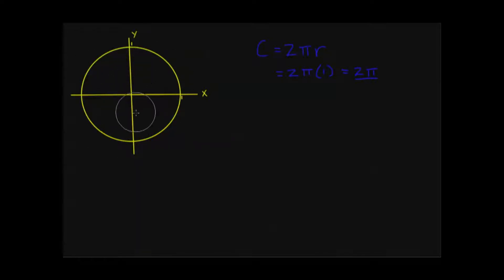This is useful as we start talking about moving around the circle in the same fashion. Just to get some standard terminology down, this point right here — x equals 1, y equals 0 — this is what's called the initial point. We always use this as our initial point unless told otherwise. This is our standard initial point.